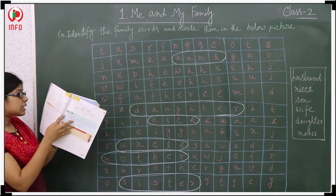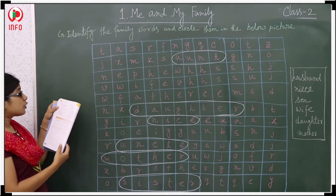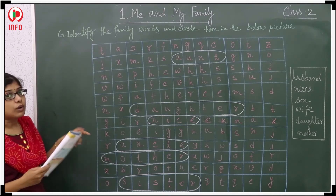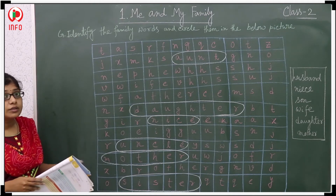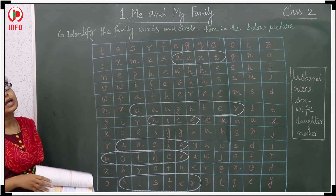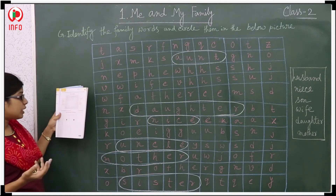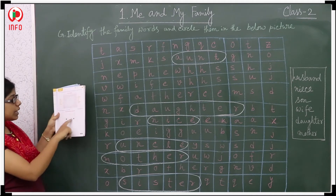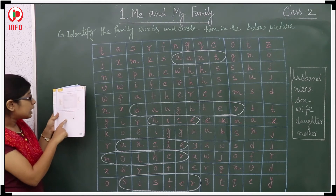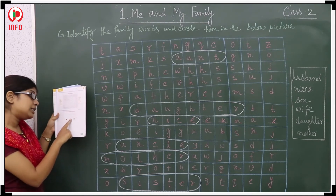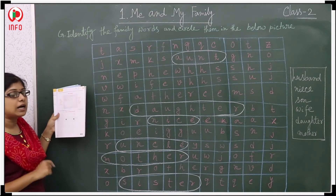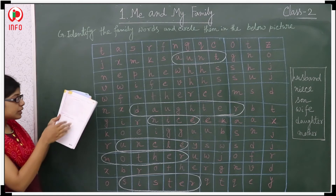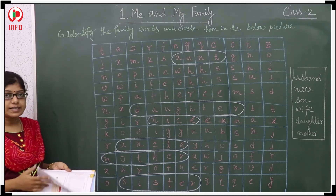So let's see the sixth one. Your mother's or father's grandmother — so what should be? Not your grandmother — your mother's or father's grandmother. She should be your great grandmother. So here I wrote G-R-E-A-T, G-R-A-N-D, M-O-T-H-E-R. Like this I have completed it. The remaining ones you also have to fill.